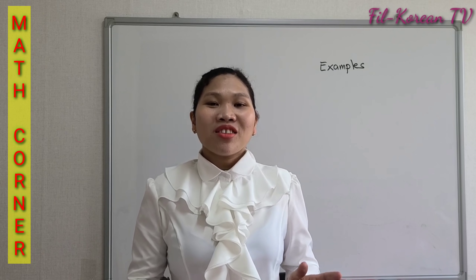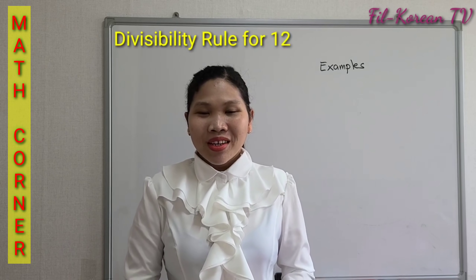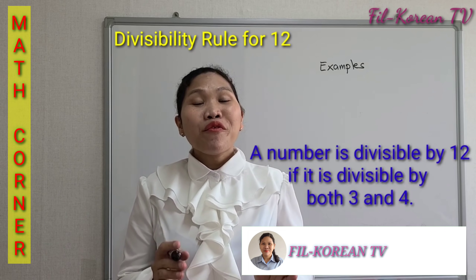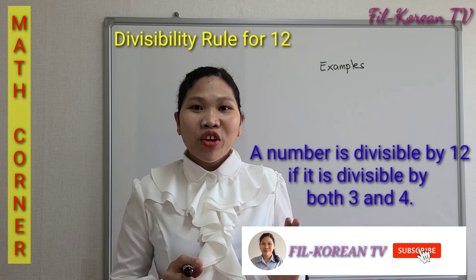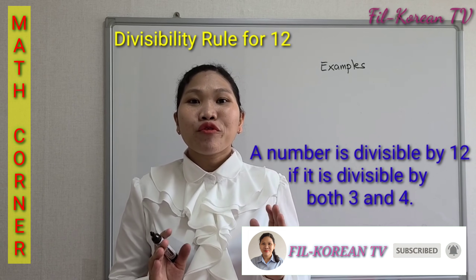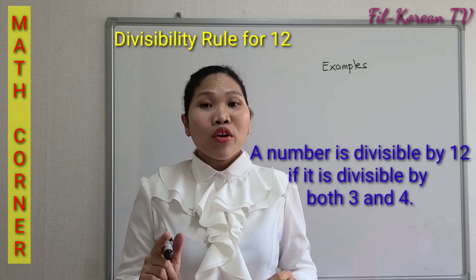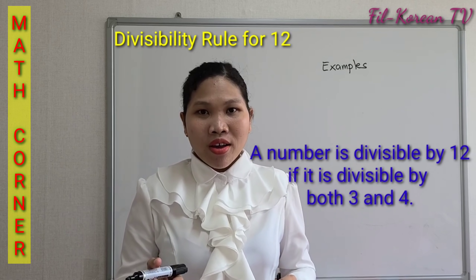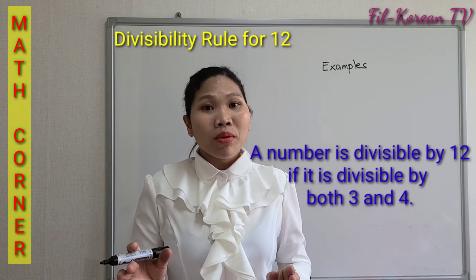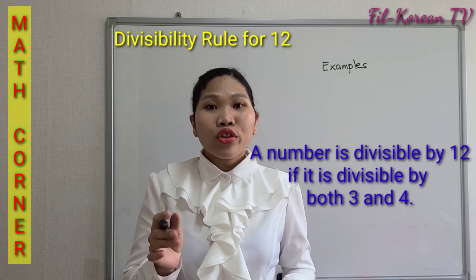Now let's proceed to the divisibility rule of 12. A number is divisible by 12 if it is divisible by both 3 and 4. You must remember the rule for 3 and 4, because a number is divisible by 12 only if it is divisible by both 3 and 4.